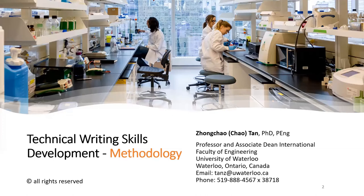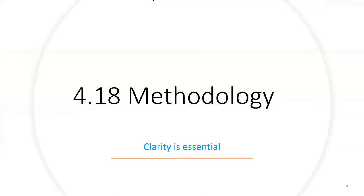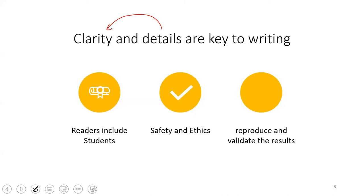Methodology basically tells you how you did the research. For methodology, the ultimate goal is clarity. Details is key. Why? Because your readers may include students from everywhere in the world, and it must be very clear so other students may reproduce your work if they want and they may want to validate your results. In order to do that, details is a key.